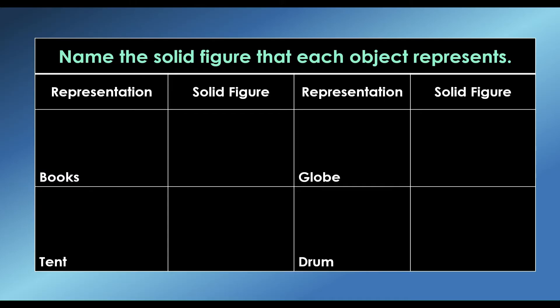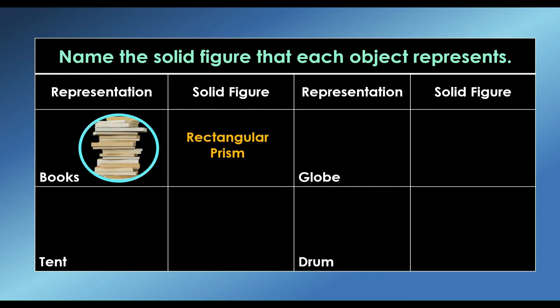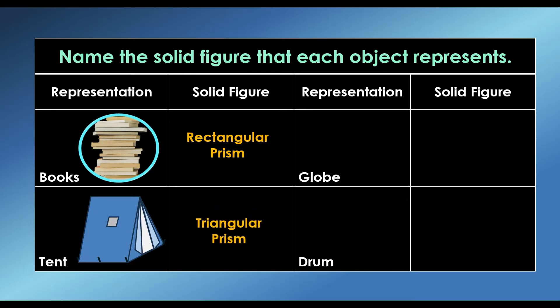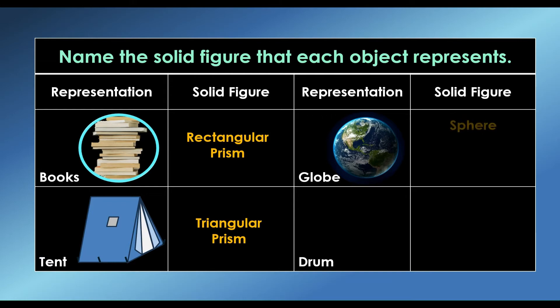This time we will name the solid figure that each object represents. The first object we have is books. Books represent rectangular solid figures. Next is a tent. A tent represents a right triangular prism. We have a globe. A globe represents a solid figure of a sphere.